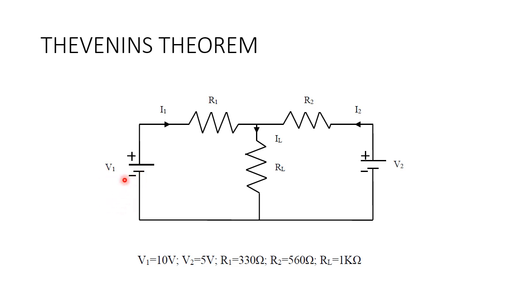Thevenin's theorem. This is the circuit we are going to use for Thevenin's theorem. In this circuit, V1 is 10 volt, V2 is 5 volt, R1 is 330 ohm, R2 is 560 ohm, and load resistor is 1 kilo ohm. So we are going to find the current flowing through the load resistor.